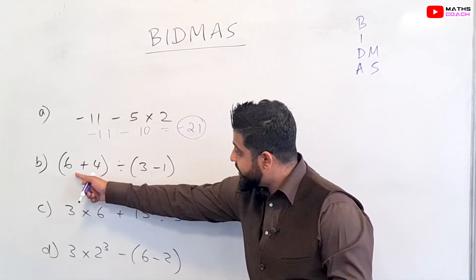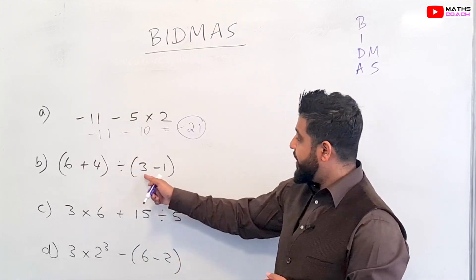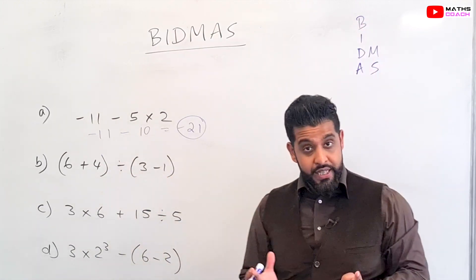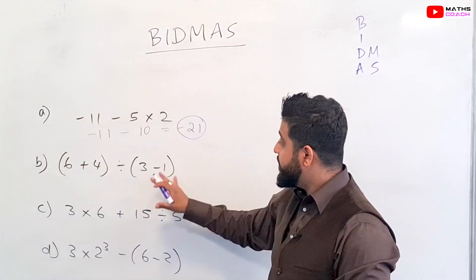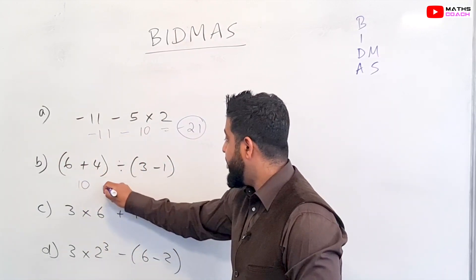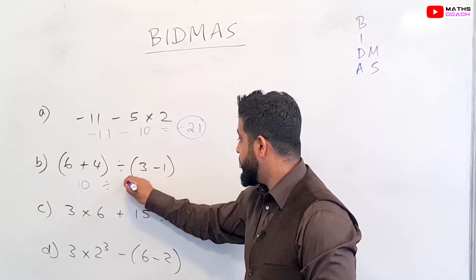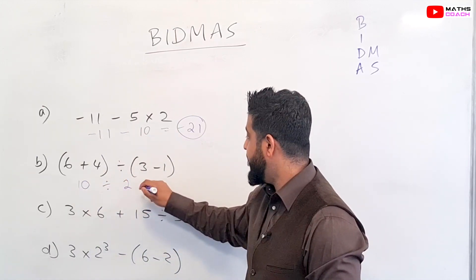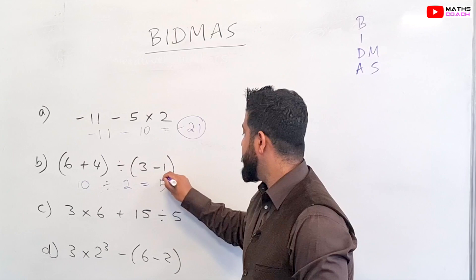Now on to the next one: (6 + 4) ÷ (3 - 1). So BIDMAS says deal with the brackets first. We are going to calculate the value of both brackets. 6 + 4 is equal to 10, and then 3 - 1 is equal to 2. So we've got 10 ÷ 2 which is simply 5.